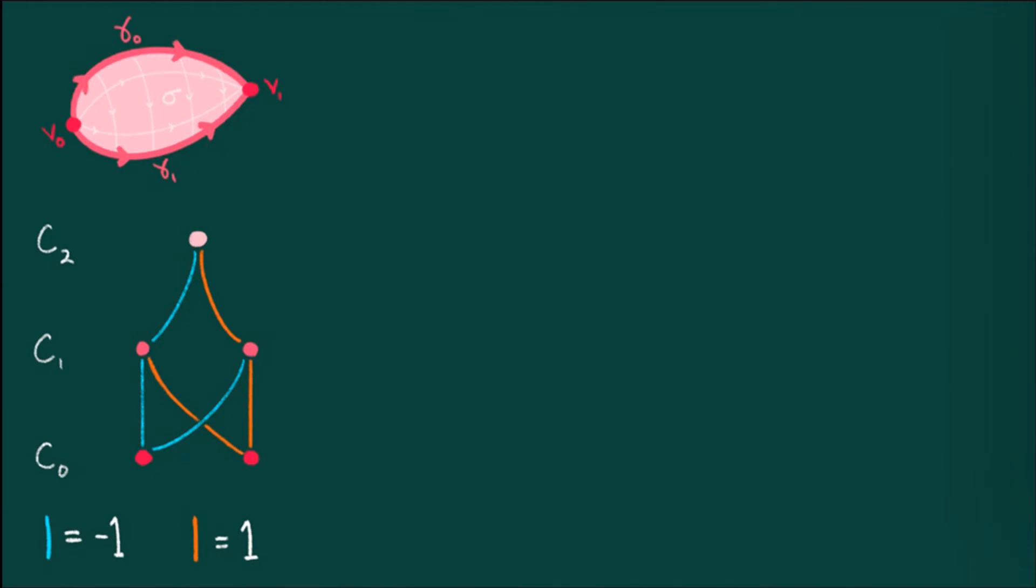The boundary map is a matrix of zeros, ones, and negative ones, which I colored as follows. Orange denotes one, while blue denotes negative one. I drew the zeros as dark green, which coincidentally was the background color.